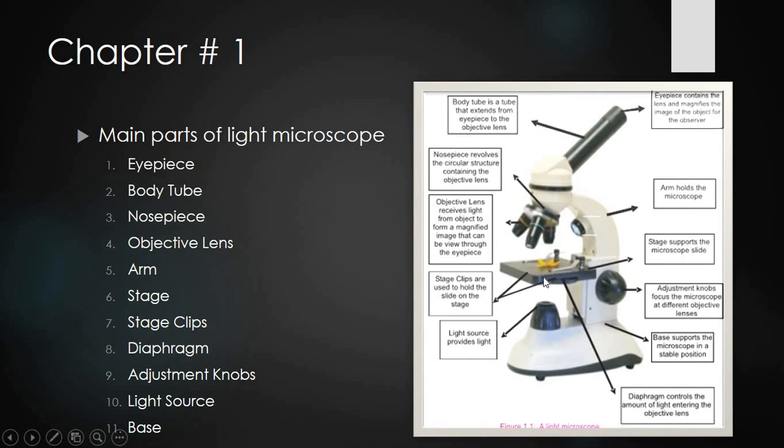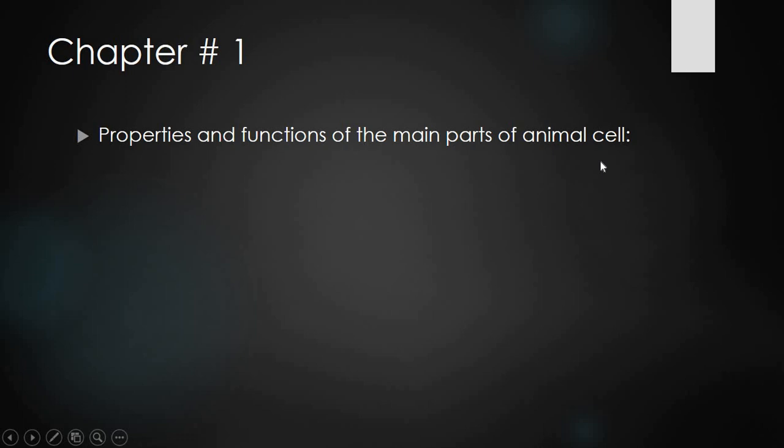Now let us look at the properties and functions of the main parts of animal cells and plant cells, and how they are different from each other.